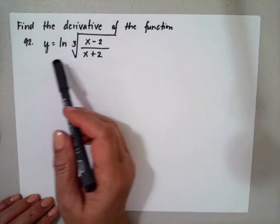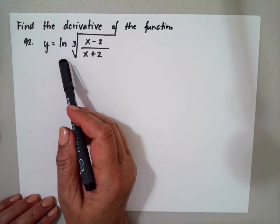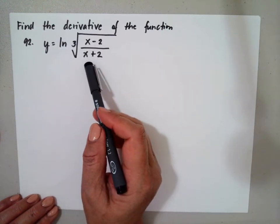Find the derivative of the function y is equal to ln cube root of x minus 2 over x plus 3.